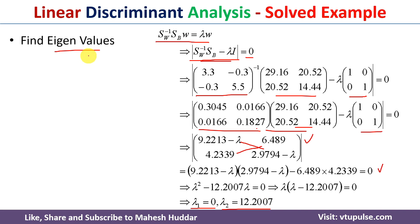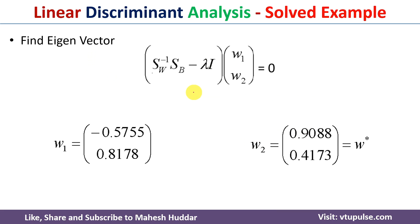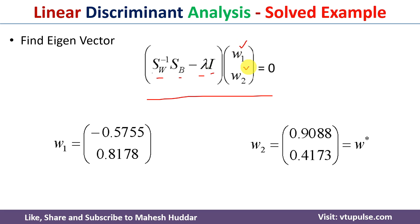Once we have the eigenvalues, the next step is to calculate the eigenvectors. We substitute each lambda value into the equation (Sw inverse Sb minus lambda I) w = 0. This gives two simultaneous equations, from which we solve for w1 and w2. If there are more eigenvalues, we get w3 and so on.